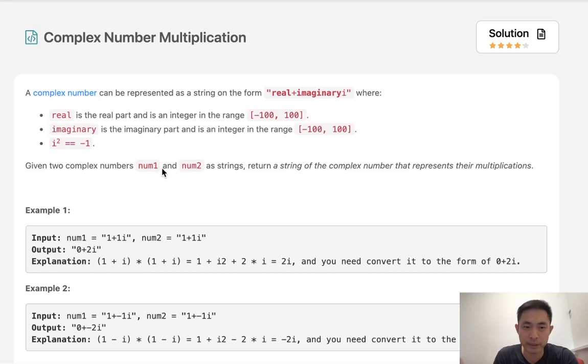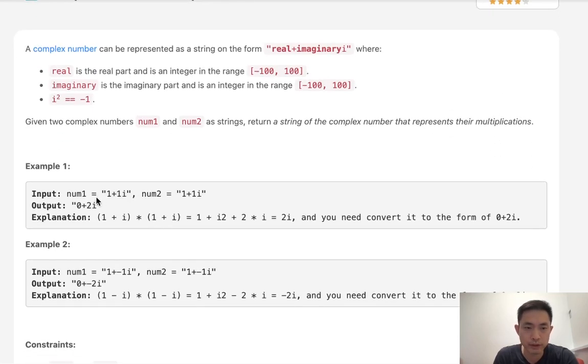Given two complex numbers, num1 and num2, return a string of the complex number that represents their multiplication. So if we're given two numbers, two strings and their imaginary numbers, what we're going to do is essentially multiply the first real numbers together, subtract the multiple of the imaginary, because we know the i is always going to be there. And i squared is going to be equal to negative 1.